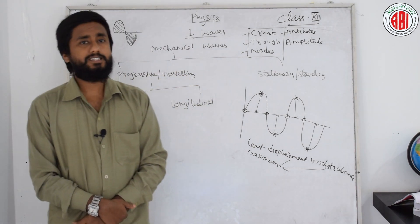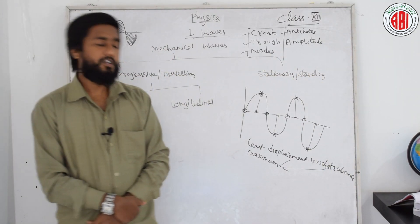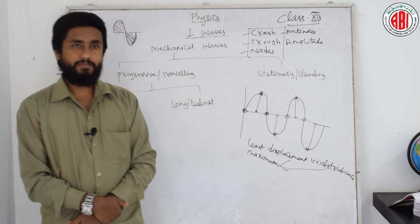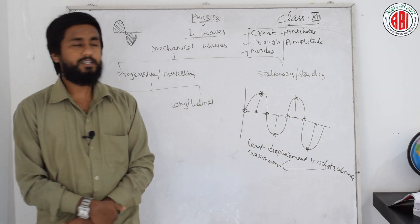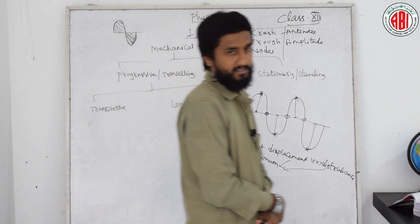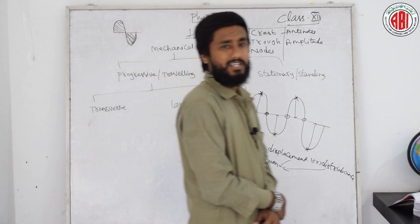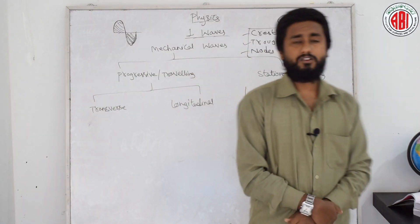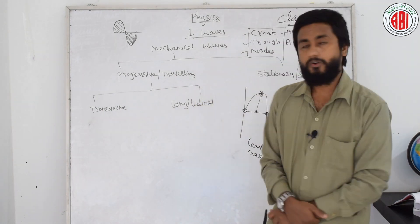Progressive wave: This is an advancing wave which moves in the medium continuously with finite velocity. These waves are produced due to the continuous periodic vibration of the particles of the medium. Each particle of the medium executes identical periodic motion about the mean position of rest. The phase of vibration varies continuously from point to point. All the particles do not pass through their mean position or reach their outermost position simultaneously. Wave curve advances without changing shape. The amplitude of each particle is the same.